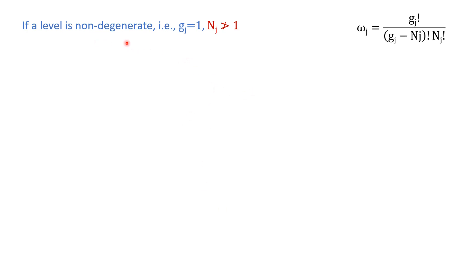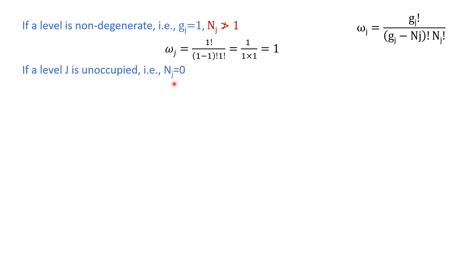Just like we considered an example of a non-degenerate state: what will be the thermodynamic probability of that energy level? In that case, using this formula with gj equal to one — and keep in mind nj can never be greater than one — if you put gj equal to one and nj equal to one you get Ωj equal to one, meaning there is only one possible distribution. Similarly, for an unoccupied level you put nj equal to zero, and again you get Ωj equal to one.